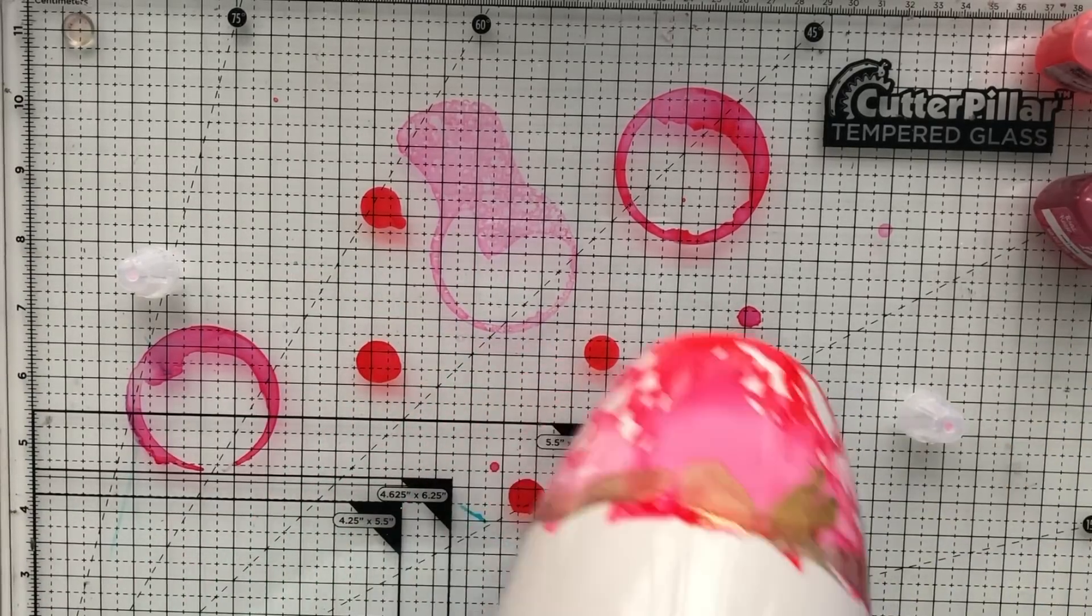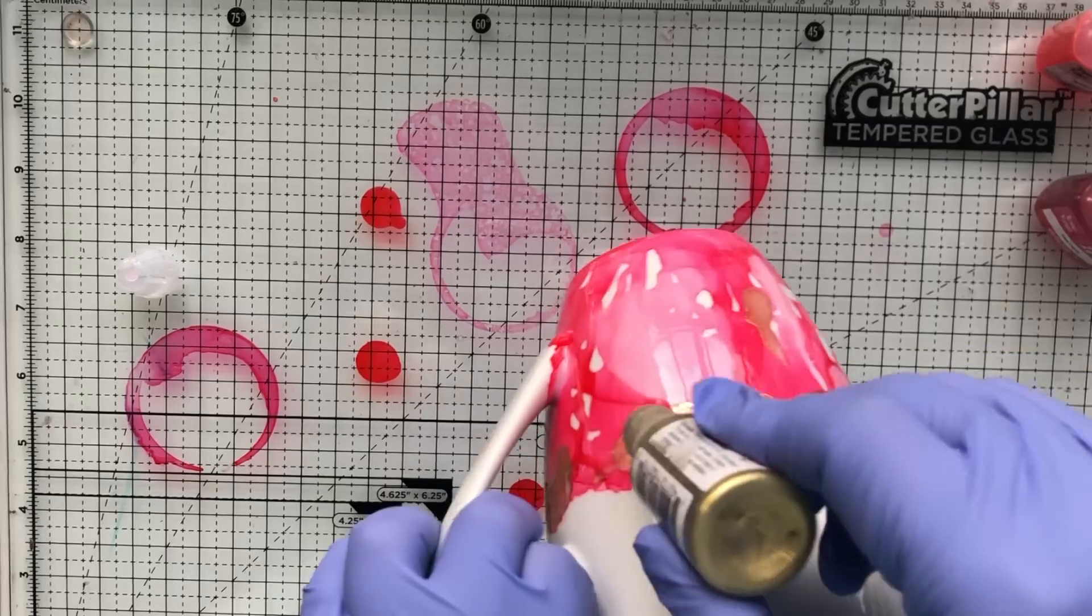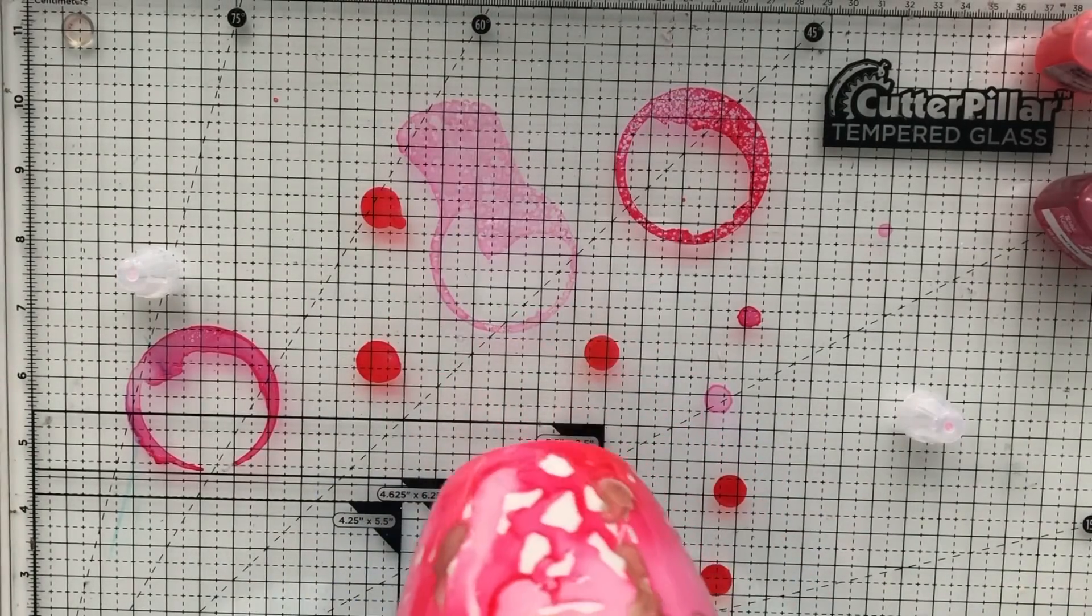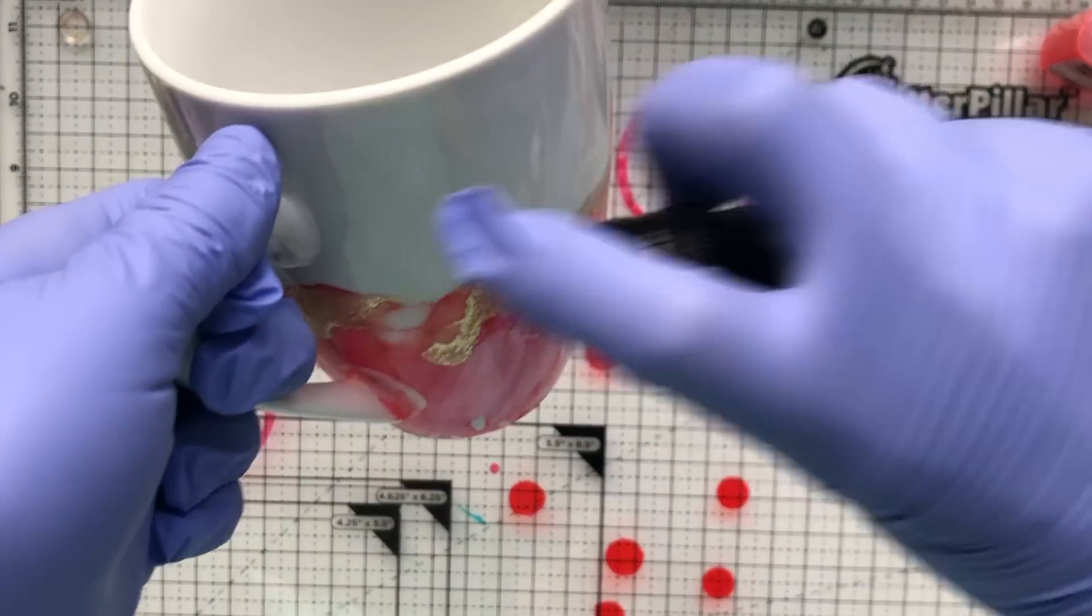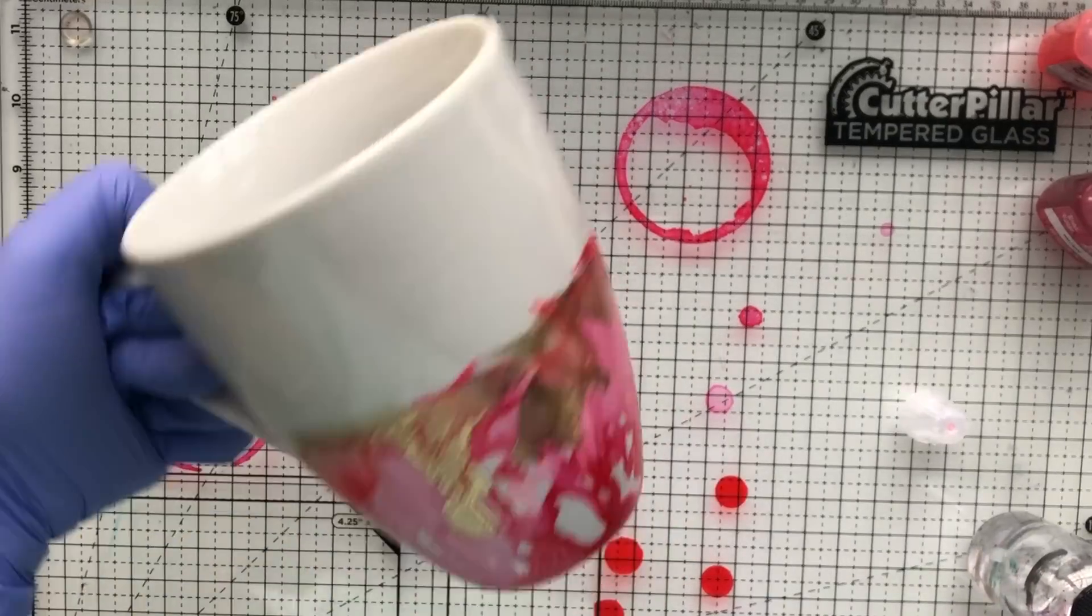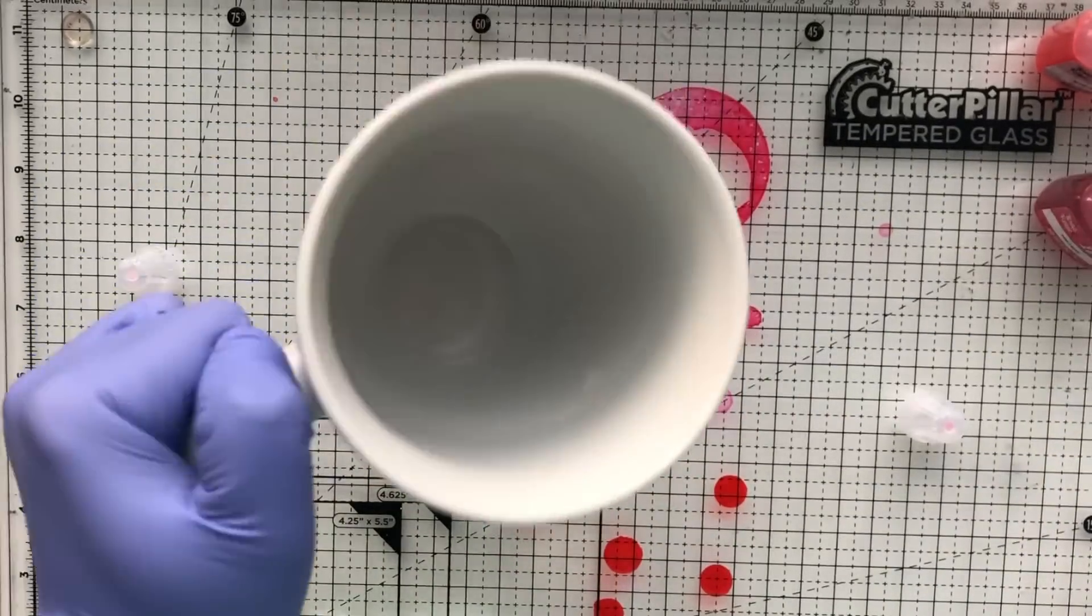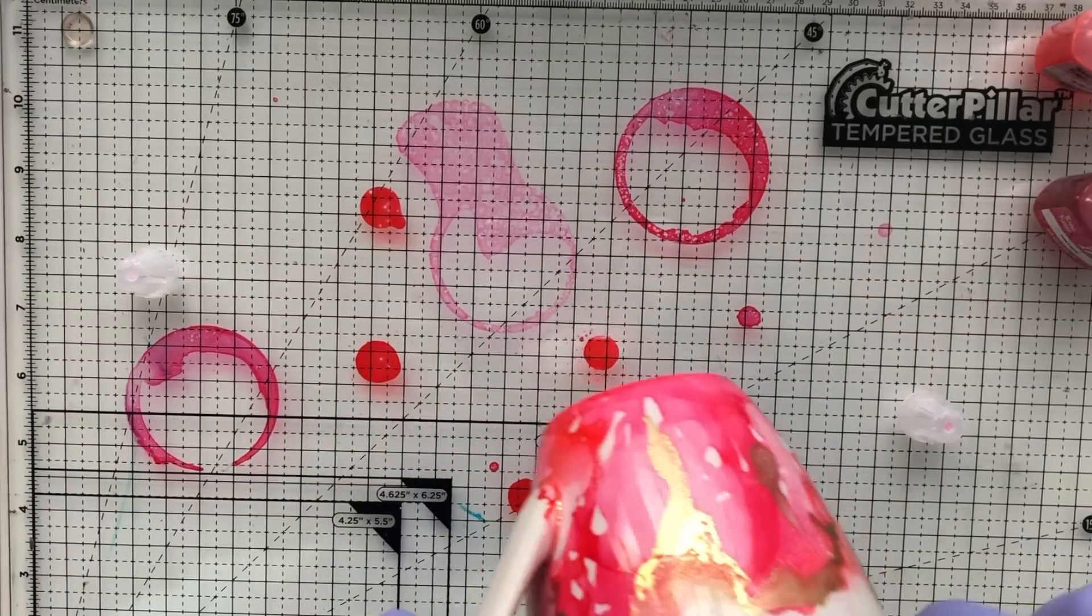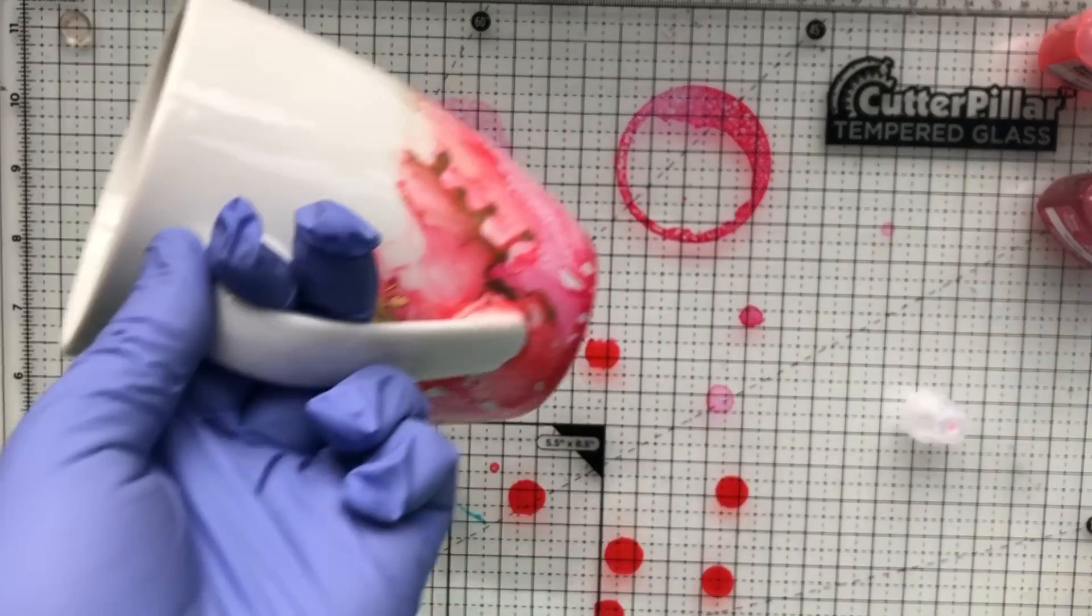I also have a mister bottle filled with isopropyl alcohol that I got from the grocery store and I'm just spraying that on there. Do not spray any alcohol blending solution or anything like that because that contains resin and you don't want that airborne. But spraying a little bit of isopropyl alcohol is okay.